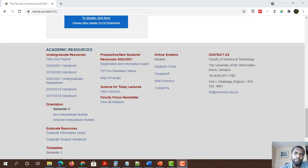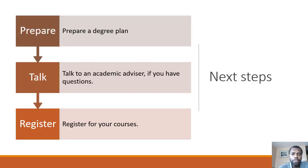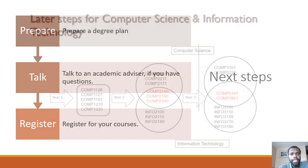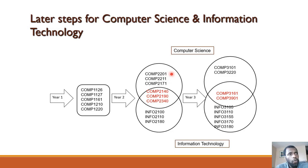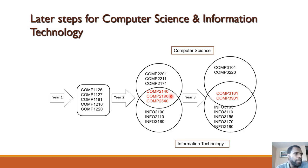To give you a sense of what is coming down the road: for both Computer Science and IT, you take the five computing courses specified in year one. In the second year, the core courses are COM2201 (Discrete Math), COM2211 (Analysis of Algorithms), COM2171 (Object Technology), COM2140 (Software Engineering), COM2190 (Ubiquitous Computing), and COM2340 (Computer Architecture and Organization).